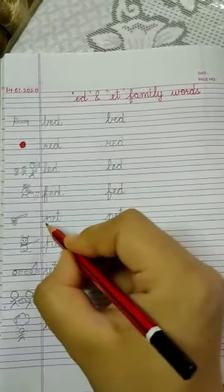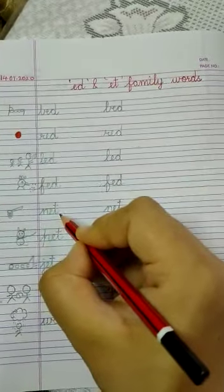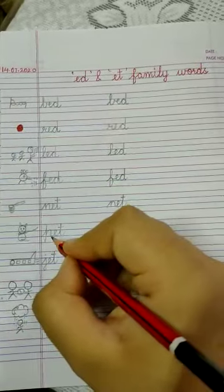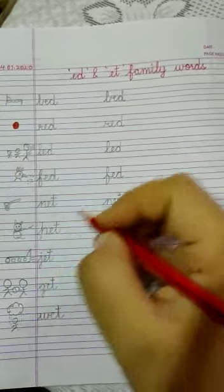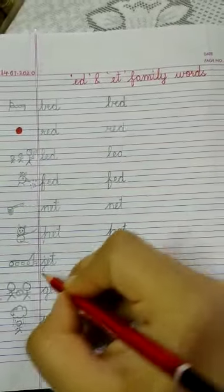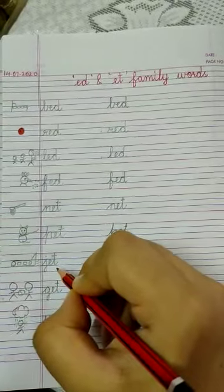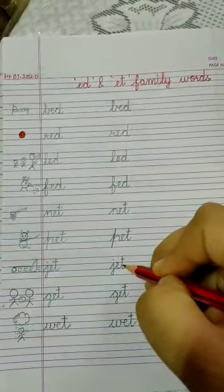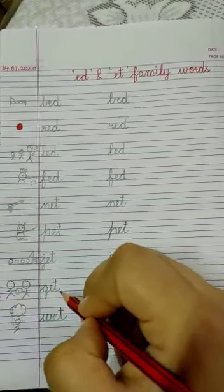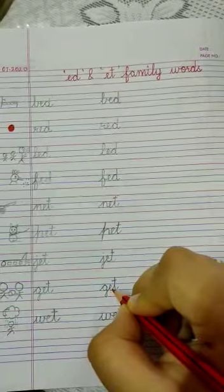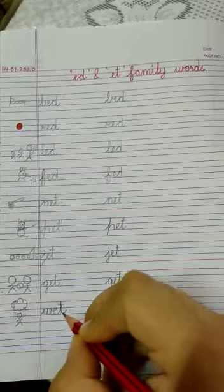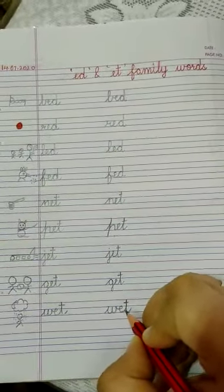Net — N, eh, D: net. Net. Pet — P, eh, D: pet. Pet. Jet — J, eh, D: jet. Jet. Get — G, eh, D: get. Get. Wet — W, eh, D: wet. Wet.